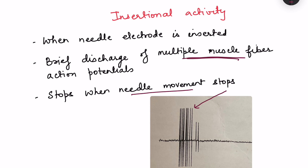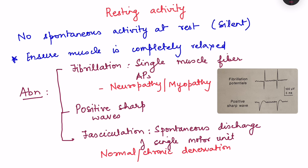Insertional activity is not abnormal unless the discharge continues even after needle movement has stopped — if it continues, then it is abnormal. Second is resting activity: at rest we do not get any spontaneous electrical activity in the muscle. The muscle is silent at rest because only when the neuron is stimulating the muscle will action potentials be generated in the muscle fibers.